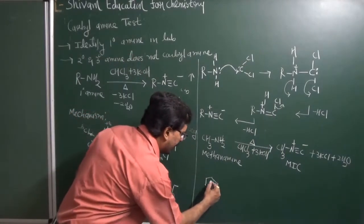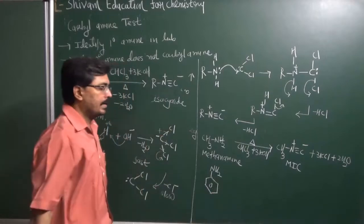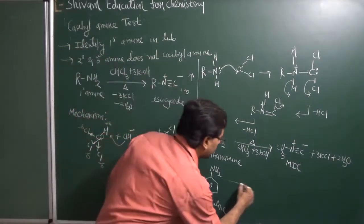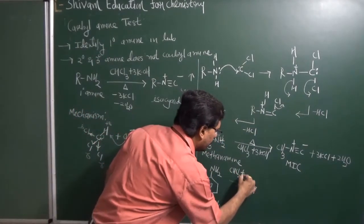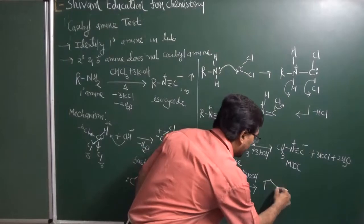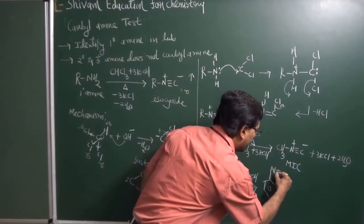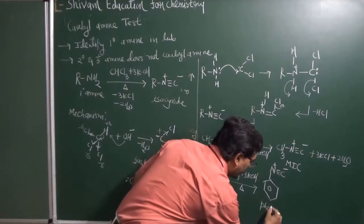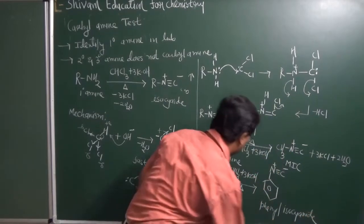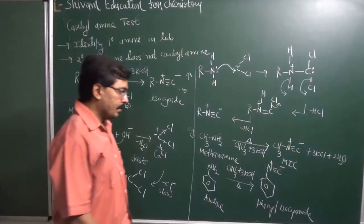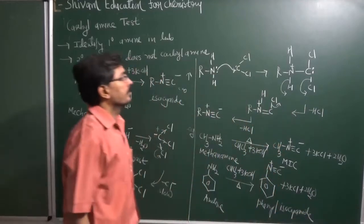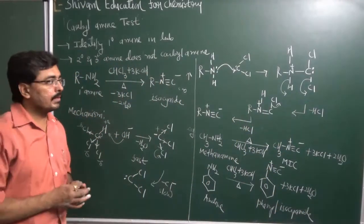Similarly, if we have aniline, then aniline also gives the Carbylamine Test. If aniline is reacted with chloroform and three moles of potassium hydroxide, the compound obtained is known as phenyl isocyanide. The phenyl isocyanide obtained is toxic in nature, and two by-products will also be obtained. The Carbylamine Test will be given by primary amine.